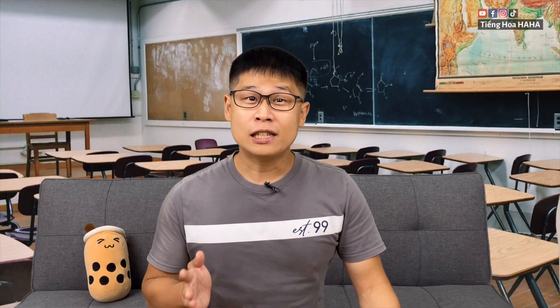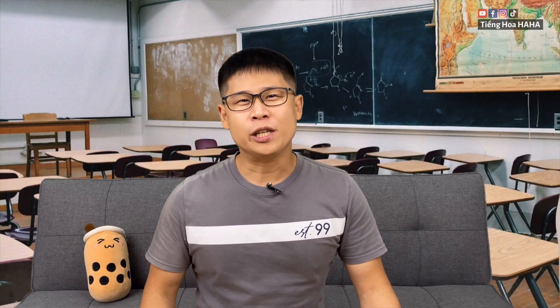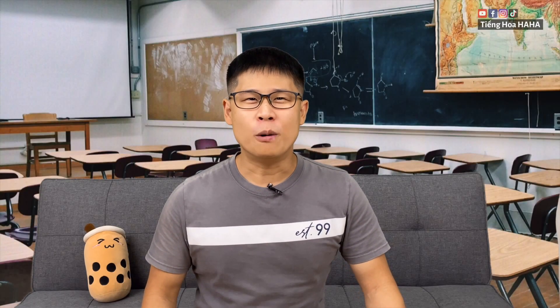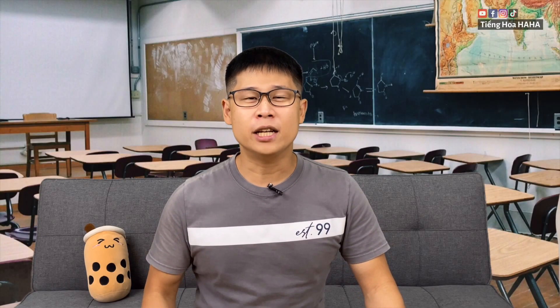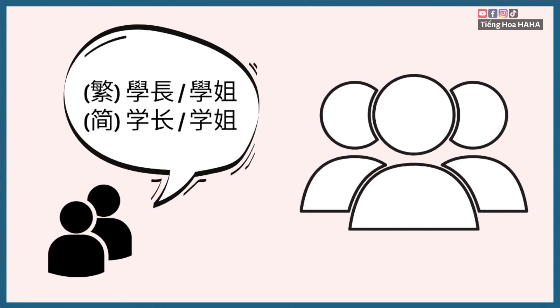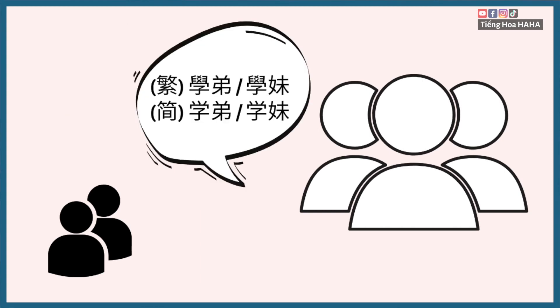對了，除了上面那些資訊以外，你還必須知道我們在學校裡面稱呼他人的方式。除了你知道的同學、老師以外，稱呼年級比你高的同學，你可以說「學長」或「學姐」；稱呼年級比你低的同學，則是「學弟」或「學妹」。